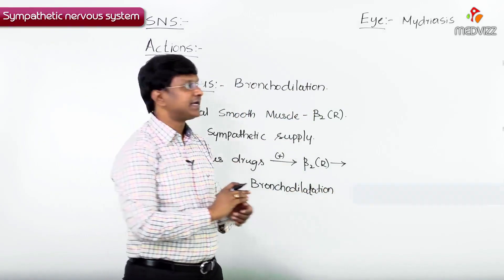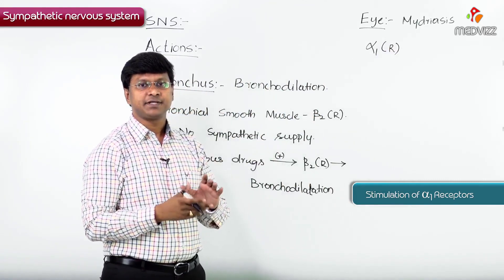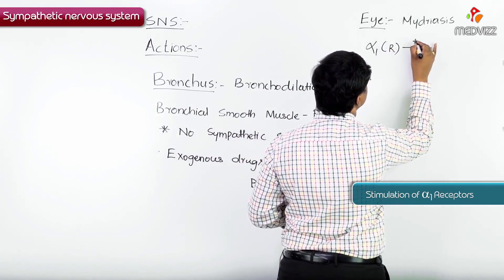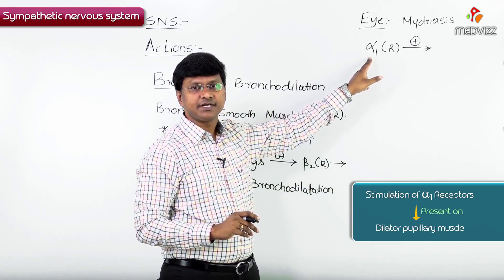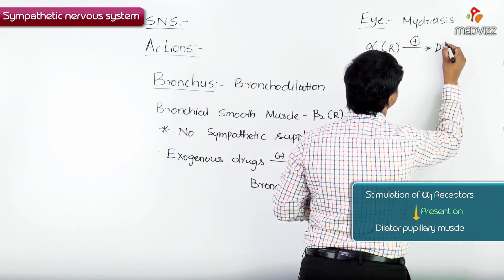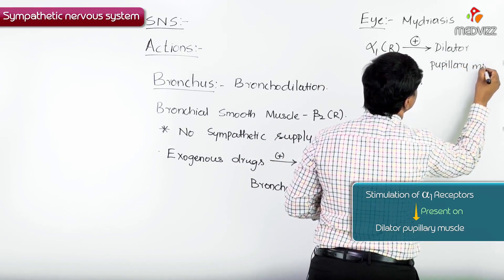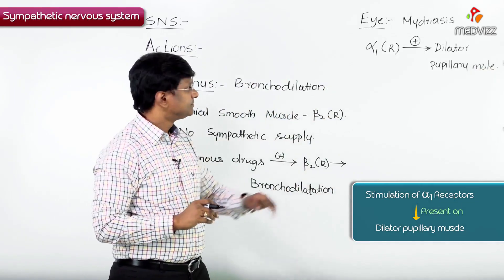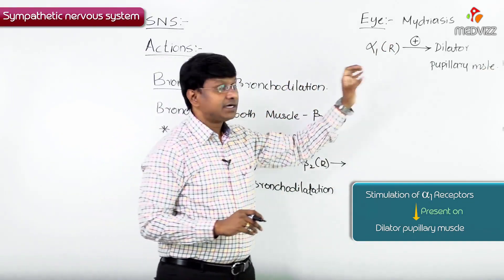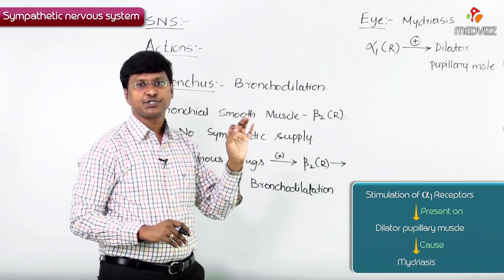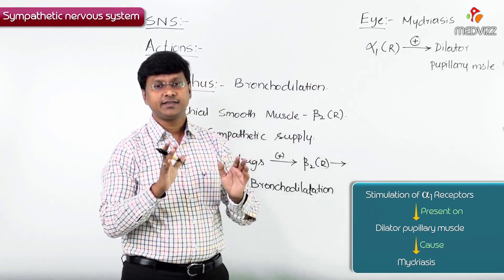The sympathetic receptors present within the eye are the alpha-1 receptors. Stimulation of alpha-1 receptors will cause pupillary dilation. These alpha-1 receptors are present on the dilator pupillary muscle. When they are stimulated, there will be dilation of the pupil — mydriasis. So stimulation of alpha-1 receptors on the dilator pupillary muscle causes mydriasis.